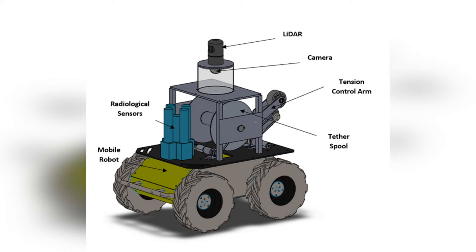Radbot is made up of three major subcomponents: the mapping and navigation, radiological detection and localization, and the tether management system. The tether will be 50 meters long to allow the initial entry team to operate the Radbot from a safe distance.